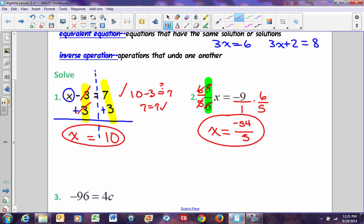If you wanted to check it, negative 54/5 multiplied by 5/6 is supposed to equal negative 9. The 5s cancel out, 6 goes into 54 nine times, and you get negative 9 equals negative 9, and it does check.